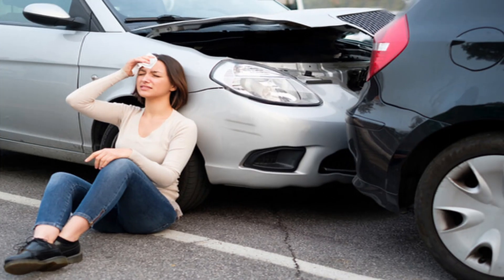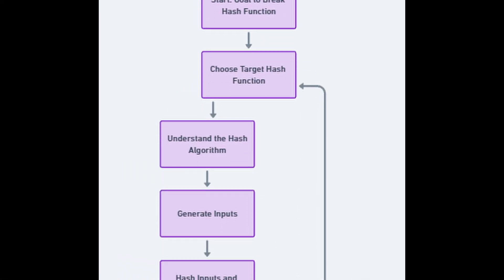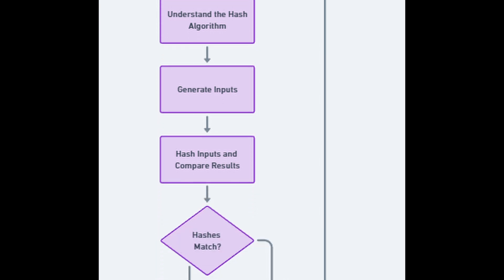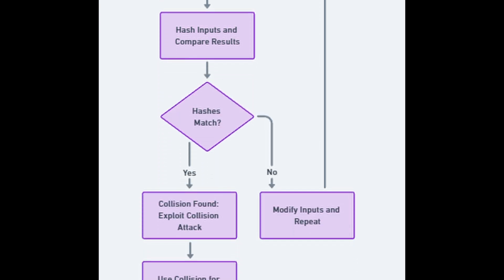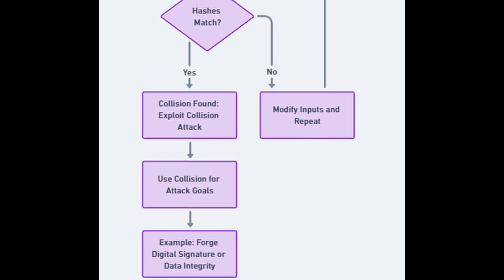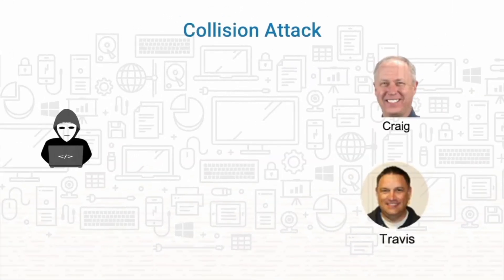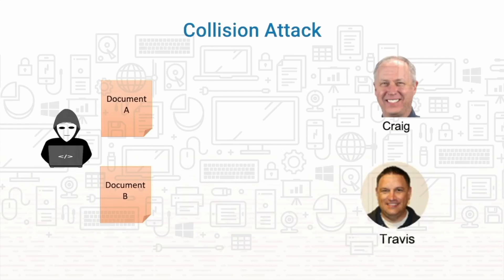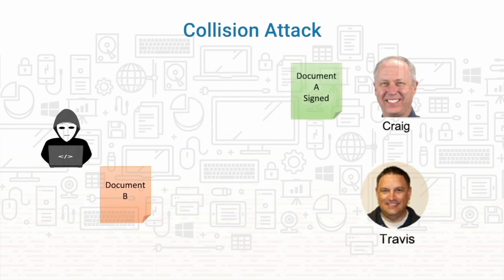Another type of attack is the collision attack. A collision attack tries to find two inputs that produce the same hash value. This type of attack is often used on digital signatures. For example, a hacker creates two different documents that have an identical hash value. With this type of attack, the hacker wants to get Travis to accept the second document by making it seem that it came from Craig. The first document is sent to Craig, who agrees with what the document says, so he signs it and sends it back.